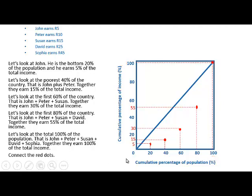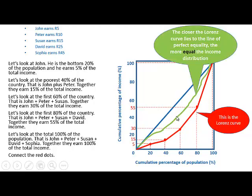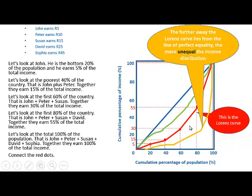Now we connect these red dots, and that line — when we connect these different points — is the Lorenz curve. If the Lorenz curve is closer to the line of perfect equality, it means that the income distribution is more equal. And if the line is further away from the line of perfect equality, like the yellow line, the income distribution is more unequal.